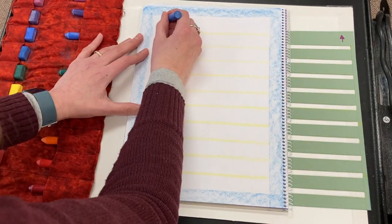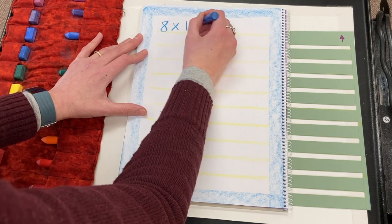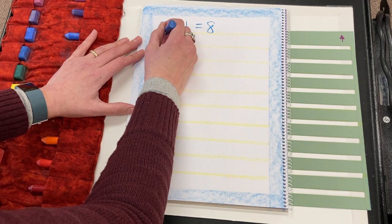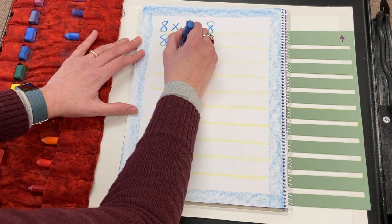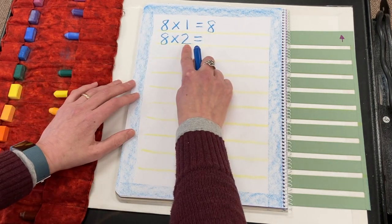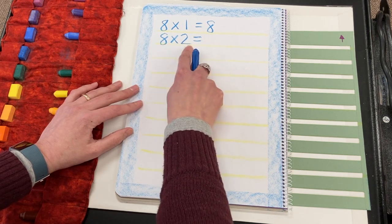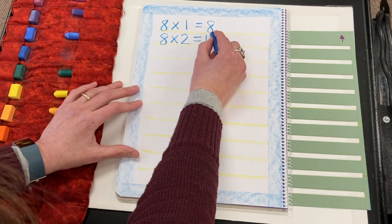Start with 8×1 and of course that will be 8. 8×2, that was shoe and skate. That was the sick queen. The sick queen, 16.